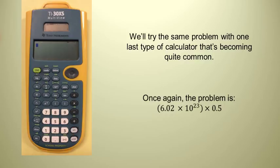23 and then you have to hit the right arrow button. Because if you don't do that, your calculator is going to think that you're still typing in the exponent. So you have to hit the little right arrow and then times 0.5 enter. And so it's a little bit more complex, but not much.